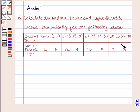Here the distribution is given such that the income is given in the range of 0 to 5, 5 to 10, 10 to 15, and so on till 35 to 40 dollars, and the corresponding number of persons are given by 2, 6, 12, 9, 15, 5, 7, 3.